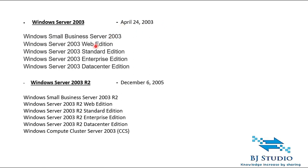Windows Server 2003 had five different editions, out of which three are still in common use. They are: Windows Small Business Server 2003, Windows Server 2003 Web Edition, Windows Server 2003 Standard Edition, Windows Server 2003 Enterprise Edition, and Windows Server 2003 Data Center Edition.